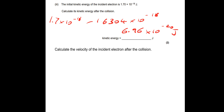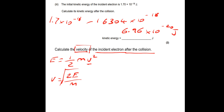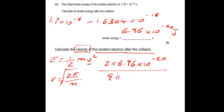There's a bonus question: calculate the velocity of the incident electron after the collision. Using KE = ½mv², rearranged to v = √(2E/m). We do 2 × 6.96 × 10⁻²⁰ divided by the mass of the electron, 9.11 × 10⁻³¹ kg, then take the square root. That gives a speed of 3.9 × 10⁵ m/s.